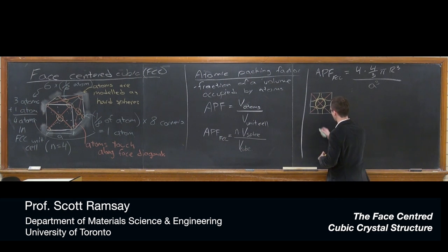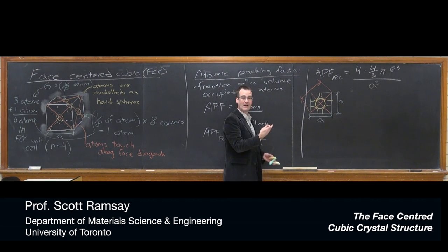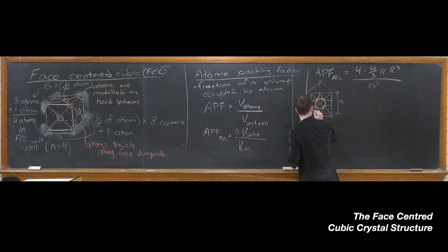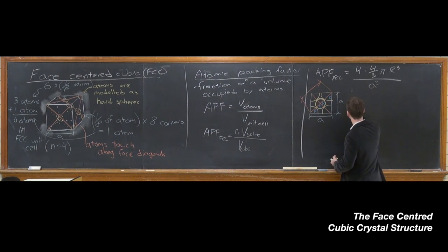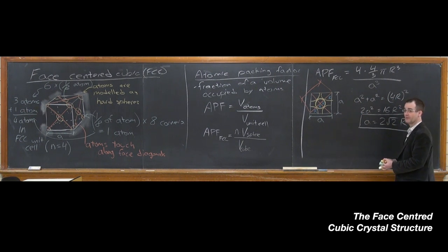So now, over here, we have our two-dimensional sketch. We've got A, A, and then this distance right here across the face diagonal, you can clearly see now in terms of the atomic radius. Because we've got one radius, two radii here in the middle, and then one in the corner. So we could use Pythagoras here to work out a relationship between A and R. So A squared plus A squared equals 4R squared. Or 2A squared equals 16R squared. Or A equals 2 root 2R. And I'll put a little box around that because that's an important equation to remember. And that's the relationship between A and R for FCC.